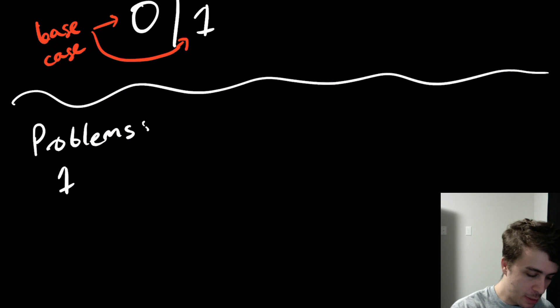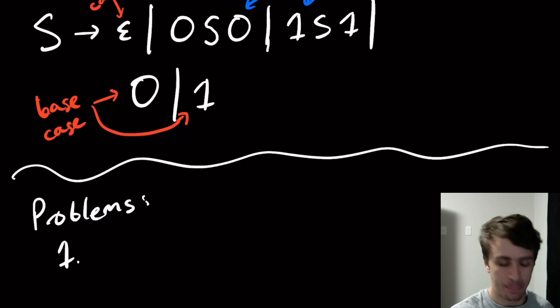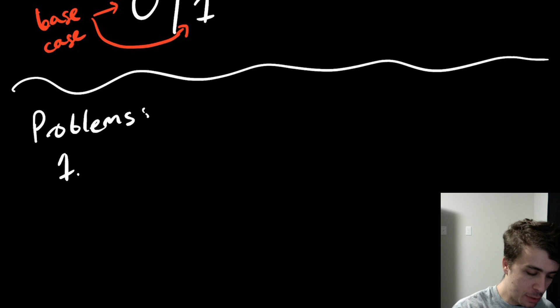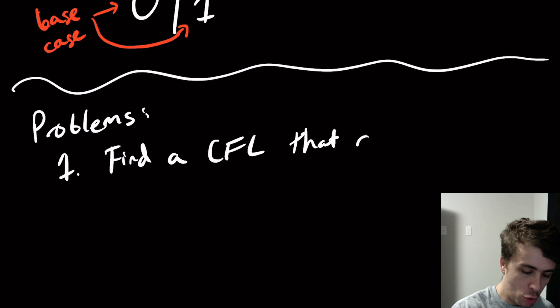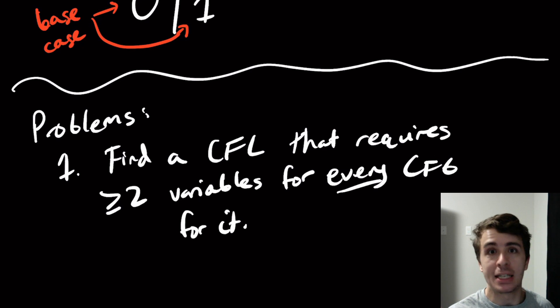The first one: we had a grammar that had exactly one variable in it. What I want you to do is to find a context-free language that requires at least two variables for every CFG for it. So no matter what grammar you can possibly ever think of for this particular language, it must have at least two variables. No matter what, you can never get away with one.